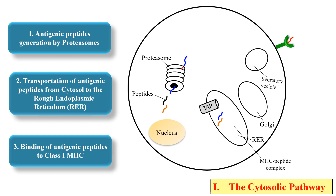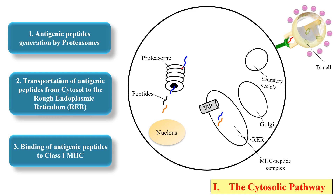Now as you can see, the MHC-peptide complex is now on the surface of the cell, so it can be recognized by T cells. In the cytosolic pathway, it is recognized by the cytotoxic T cell — that is the TC cell. Once the TC cell recognizes and binds this MHC-protein complex, it will get activated and perform the immune function. Generally the T cytotoxic cells directly kill the cells containing this antigen and protein complex. So this is the cytosolic pathway.